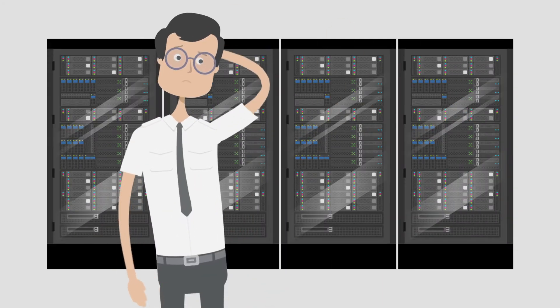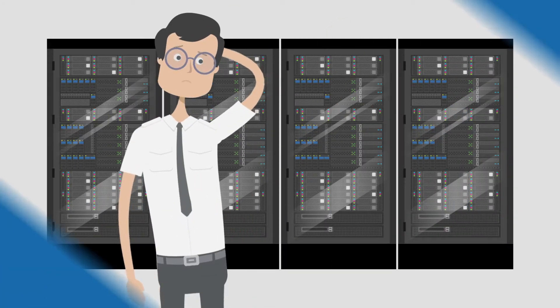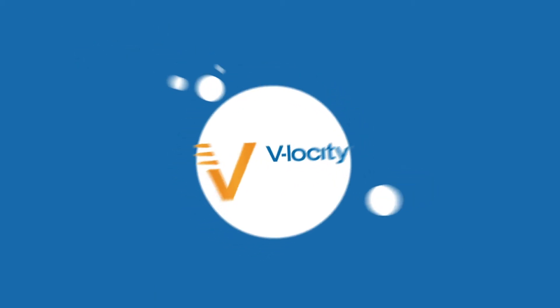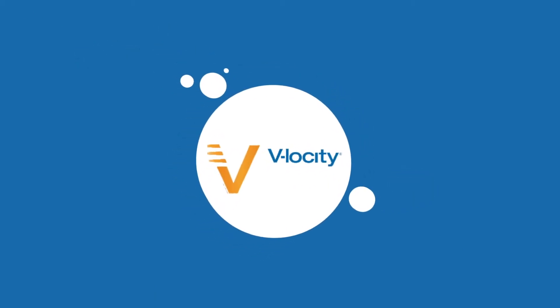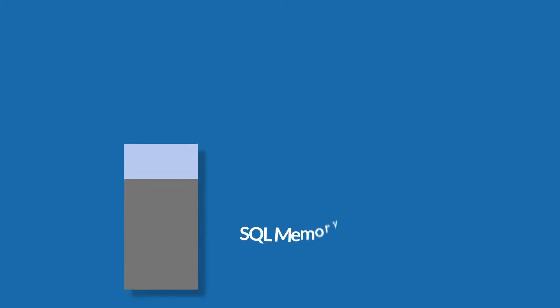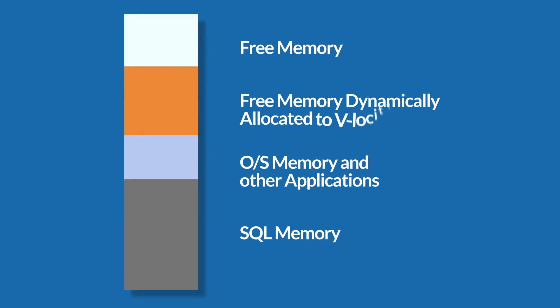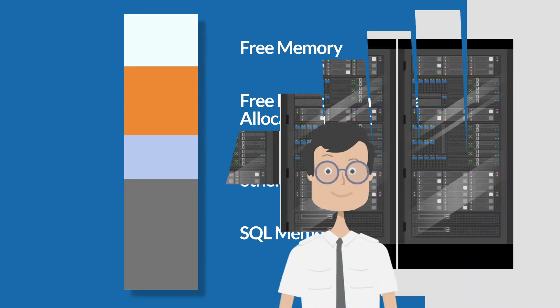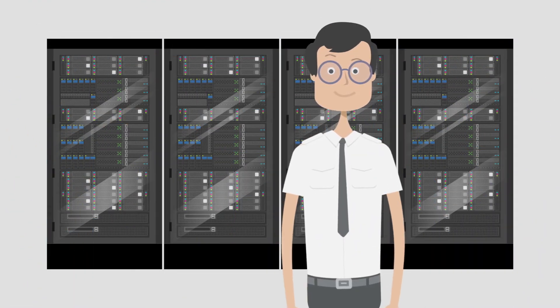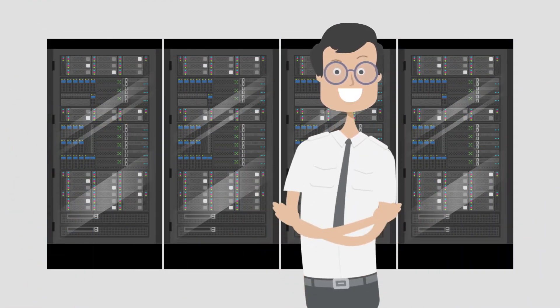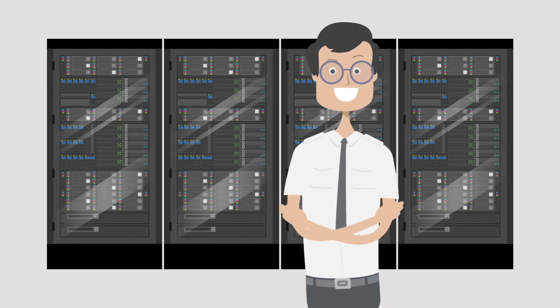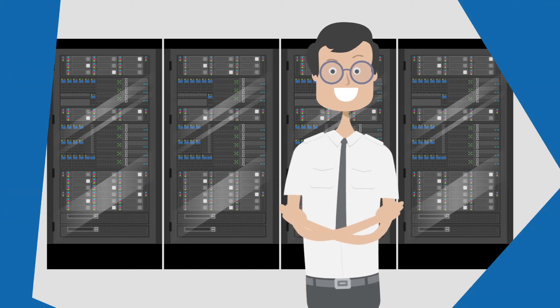Unused memory is a wasted resource. So how does Velocity use memory? Velocity dynamically uses free memory to serve an average of 30% or more of all read traffic. Most servers already have enough memory for effective read caching, so you won't need to add more.